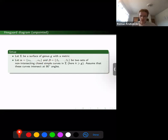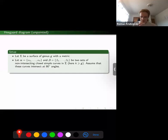We pick two collections of simple closed curves on sigma, namely the collection alpha and collection beta. There are k curves in each collection with k greater than or equal to g. We assume that in each collection, curves do not intersect each other, and curves from different collections intersect at 90 degree angles and intersections transversely.